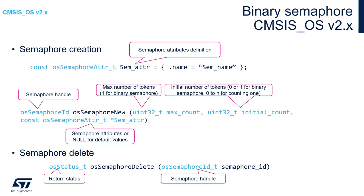Let's have a closer look at how the semaphore is created within CMSIS OS V2. Like with other components, we need to start by setting the attributes for the semaphore, filling a structure of type osSemaphoreAttr_t. In our case, we are specifying only the name. This is also visible in STM32 CubeMX and CubeIDE, where the only component within binary semaphore creation is its name.